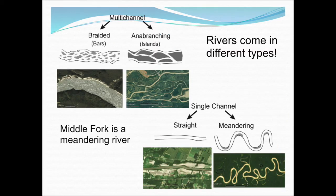Rivers do come in different types, so not all rivers are the same. You may have seen different kinds of rivers in your life — they can come in a variety of different forms. The Middle Fork, which is what we're concerned with here, is actually a type that we call a meandering river. It winds around over the landscape, and we can use our understanding of that to inform situations like what is the likelihood that this river might threaten the coal ash.